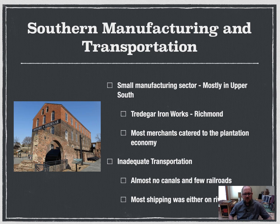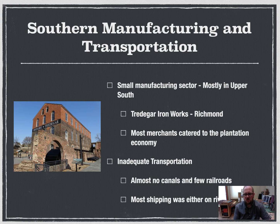As another look at the Southern economy, there was a small manufacturing sector, mostly in Virginia but a little in Alabama too. There was some transportation — some railroads, but very, very little. Almost no canals at all. Most shipping was done up and down the Mississippi River, so they were very limited with their transportation, mostly relying on proximity to rivers.